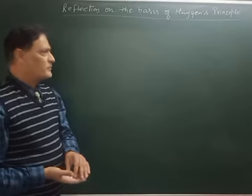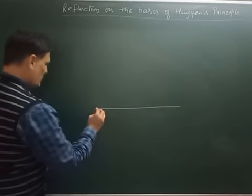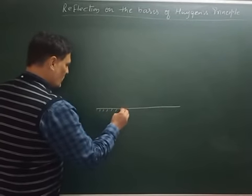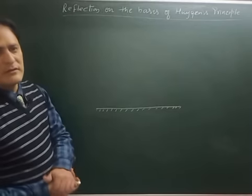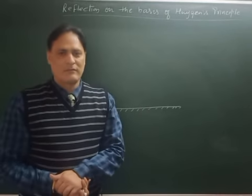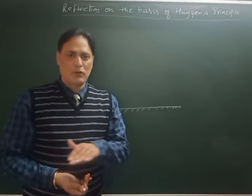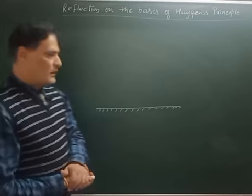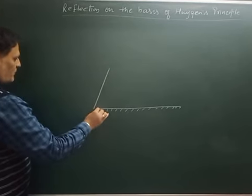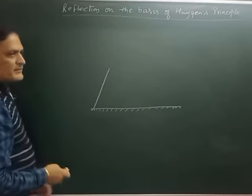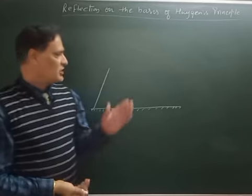For this concept, we draw a surface which is opaque. It can be a glass mirror or a plain smooth surface which is polished. A wavefront is coming towards the surface called the incident wavefront, whose shape is plain.